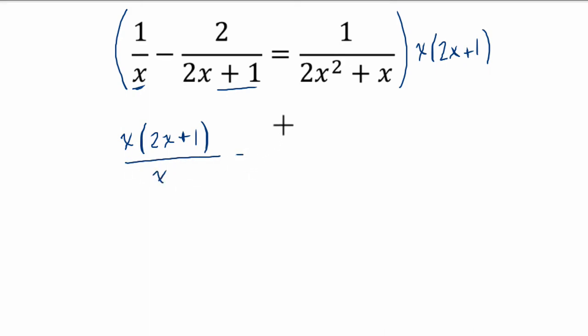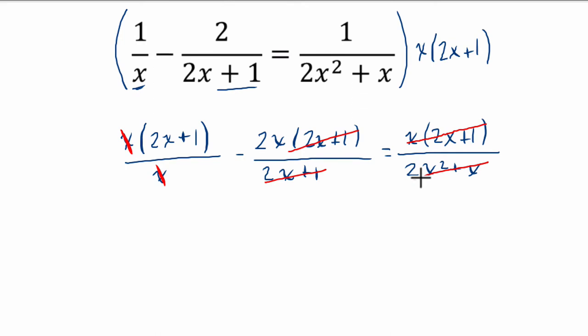Over x minus 2 times that, 2 times x times 2x plus 1 over 2x plus 1, and finally again 1 times x times 2x plus 1 over 2x squared plus x. So again, all I did there is multiply everything by x and 2x plus 1. Now here we see that we have x divided by x is 1, and 2x plus 1 divided by itself is 1, and here x times 2x plus 1 divided by itself is 1.